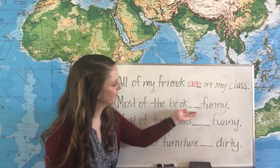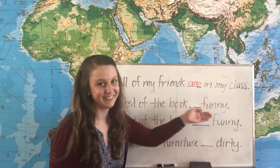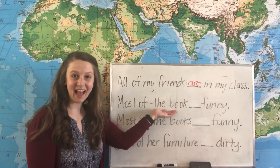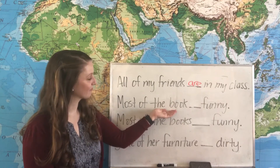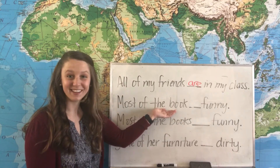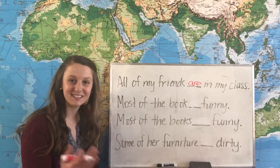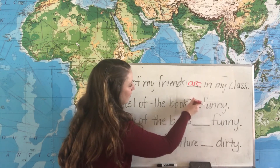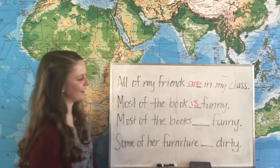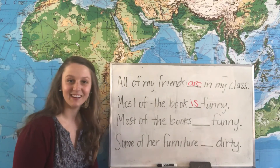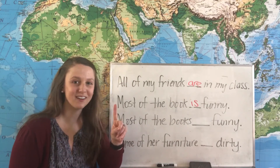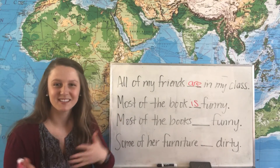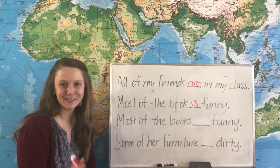Now our next example: 'Most of the book funny.' In the same way, we look at the noun in the subject. The book is singular, so we use a singular form of the be verb: 'Most of the book is funny.' The meaning here is that we are reading one book and most of it is funny, but there are some parts that maybe are serious or just not funny.